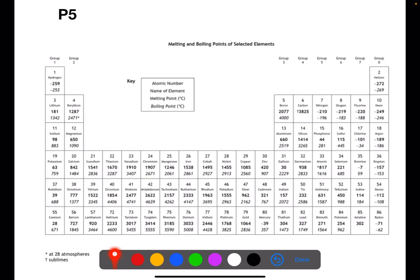On page five you have the page which shows you the melting and boiling points of selected elements. So this isn't a full periodic table. Each box has the atomic number, the name of the element, it then in bold has the melting point, the point at which the substance moves from solid to liquid, and then in italics you have the boiling point, the point at which the substance goes from liquid to gas.